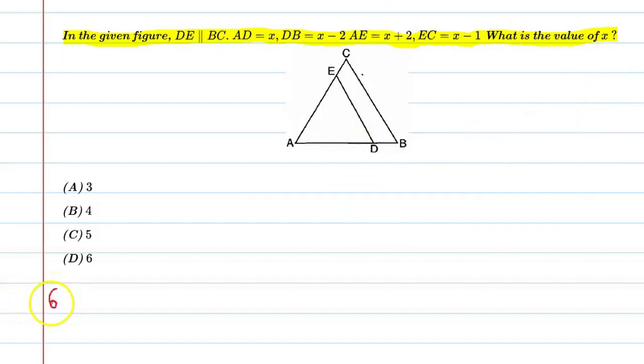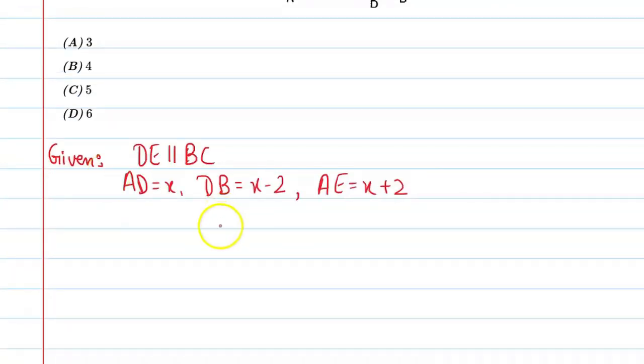Given conditions are: DE is parallel to BC, AD is equal to x, DB is equal to x minus 2, AE is equal to x plus 2, and EC is equal to x minus 1. Alright, let's start this solution.